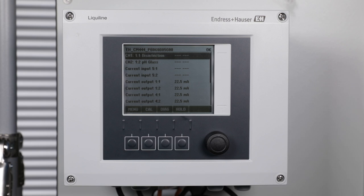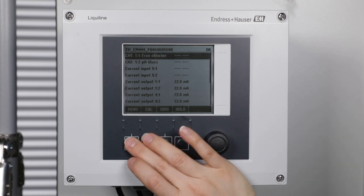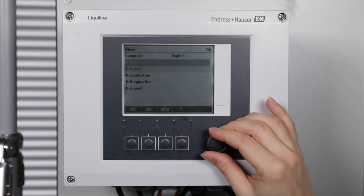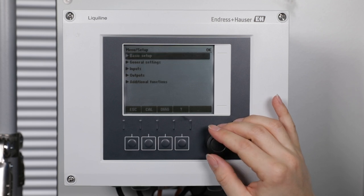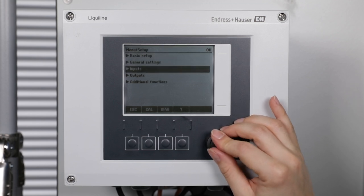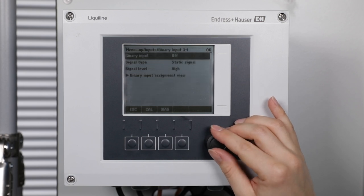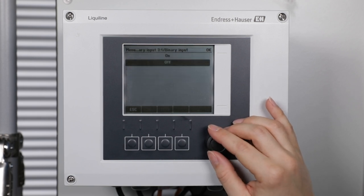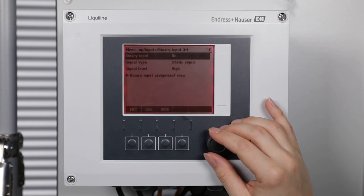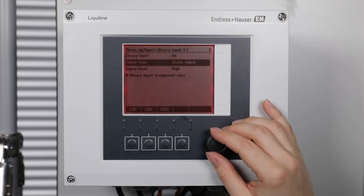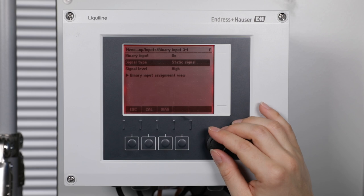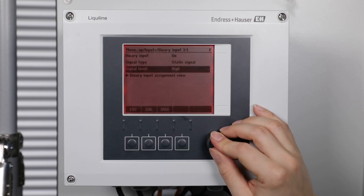First activate the binary input of the flow switch. Therefore go to menu, setup, inputs, binary input and enable the binary input. The signal tip is static signal and signal level is low.